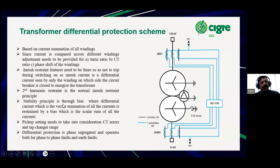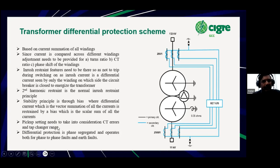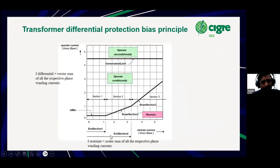The main difference between high impedance restricted earth fault protection and the differential relay is the stability principle — low impedance versus high impedance. The differential is a low impedance relay where the stability principle is through bias: the differential current is the vector summation of all the currents, whereas the restraining current is the scalar sum of all the currents. As far as the differential relay is concerned, the pickup setting needs to take into consideration CT errors and the tap changer range — if the tap changer has a plus or minus 10% range, this has to be introduced into the basic pickup setting to avoid false operation.